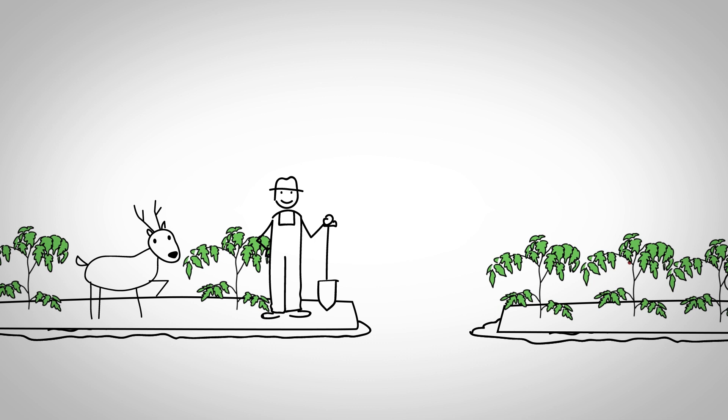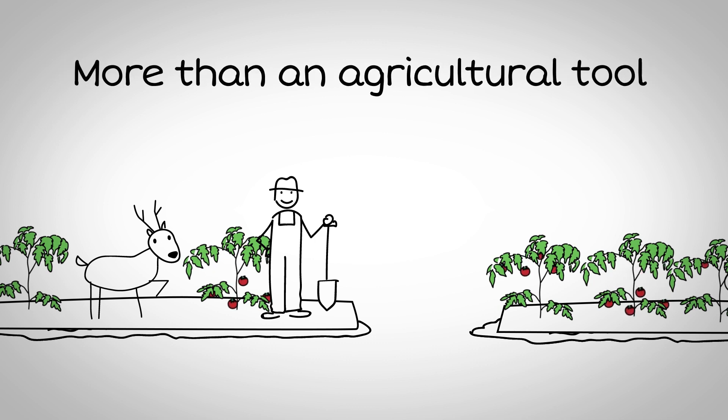But we need the film to do more than perform as an agricultural tool. To achieve a sustainable end of life, its polymers must be biodegradable, that is, eaten by microbes in the soil.